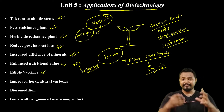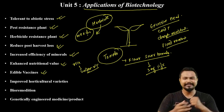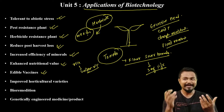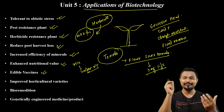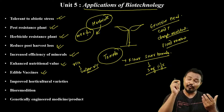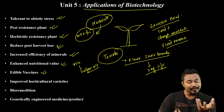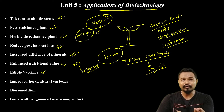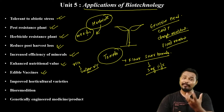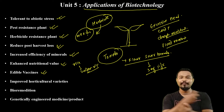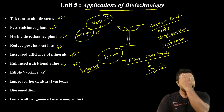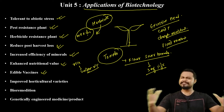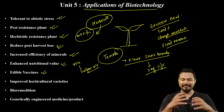Next is edible vaccines. This is a very interesting application — vaccines can be developed inside plants and food. For example, a corona vaccine could potentially be developed inside a plant. So you can eat the plant or food and already receive the vaccine. This is a very good development in biotechnology.